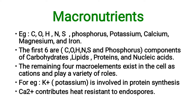Macronutrients include, for example, carbon, oxygen, hydrogen, nitrogen, sulfur, phosphorus, potassium, calcium, magnesium, and iron. The first six — carbon, oxygen, hydrogen, nitrogen, phosphorus — are found in carbohydrates, lipids, proteins, and nucleic acids. The remaining four macro elements — potassium, calcium, magnesium, and iron — exist in the cell as cations and employ a variety of roles.